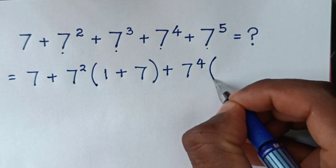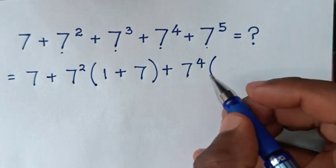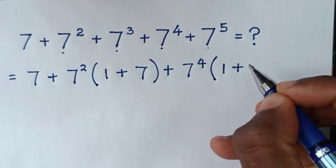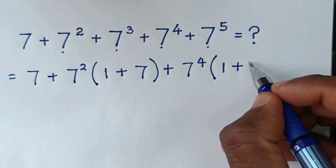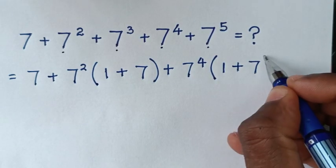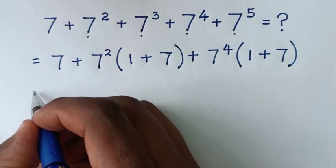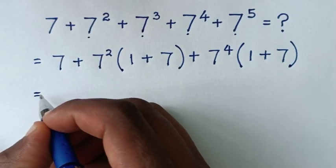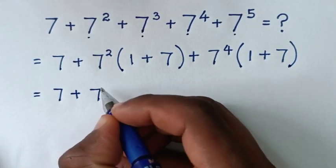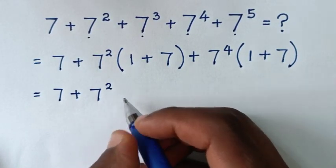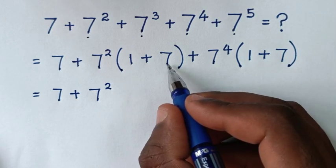So we take 7 power 4 out of bracket: 7 power 4 divided by 7 power 4 is 1, plus 7 power 5 divided by 7 power 4 is 7. Then in the next step, inside the bracket 1 plus 7 is 8.